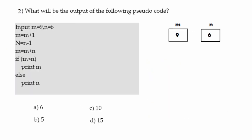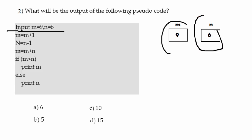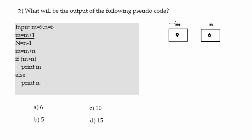Moving to the next question — we have to find the output of the pseudocode. There are two inputs: m equals 9 and n equals 6. The next statement is m equals m plus 1, so m is incremented to 10. Then n equals n minus 1, so n is decremented to 5.